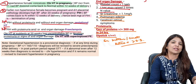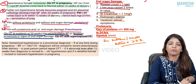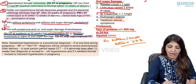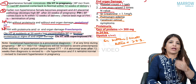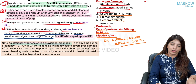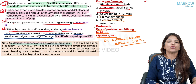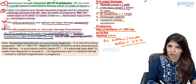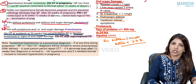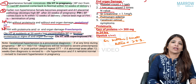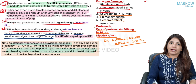Whenever there is high BP during pregnancy, it could be chronic hypertension, gestational hypertension, preeclampsia, or chronic hypertension with superimposed preeclampsia. Out of all these diagnoses, gestational hypertension is a provisional diagnosis. If at any time the patient's BP becomes more than or equal to 160 by 110, you are going to change the diagnosis of gestational hypertension to severe preeclampsia.